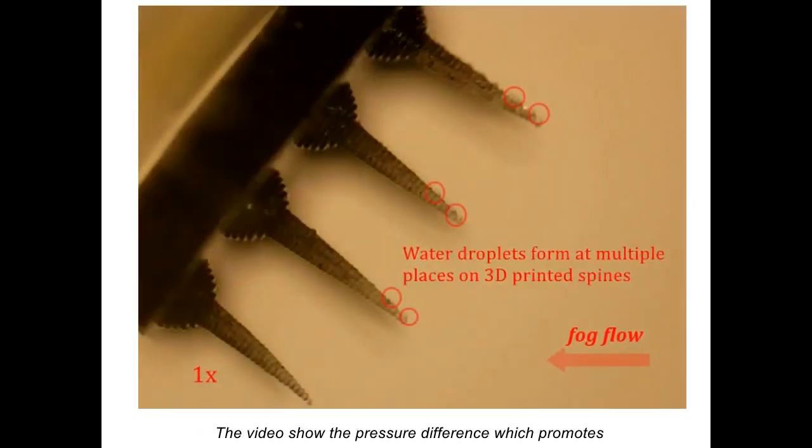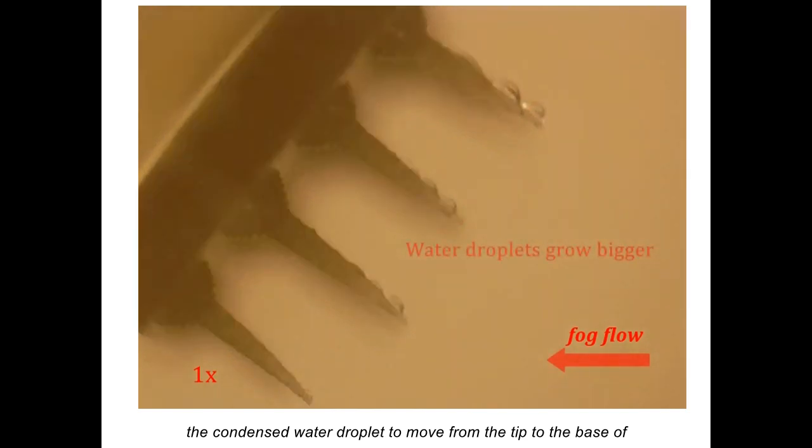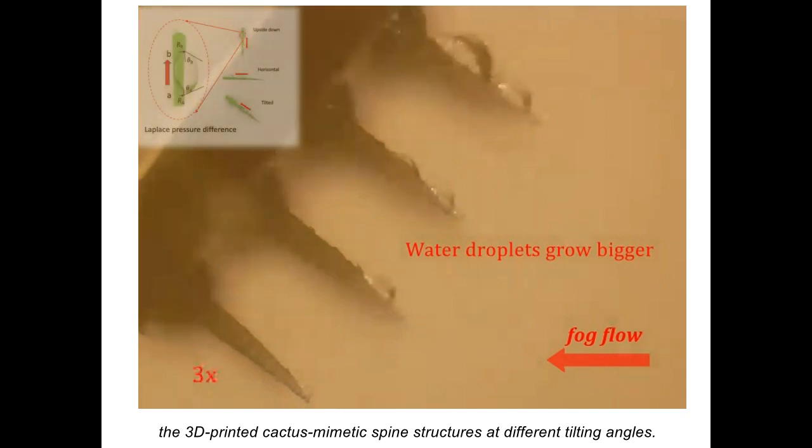The video shows the pressure difference, which promotes the condensed water droplet to move from the tip to the base of the 3D-printed cactus memetic spine structures at different telic angles.